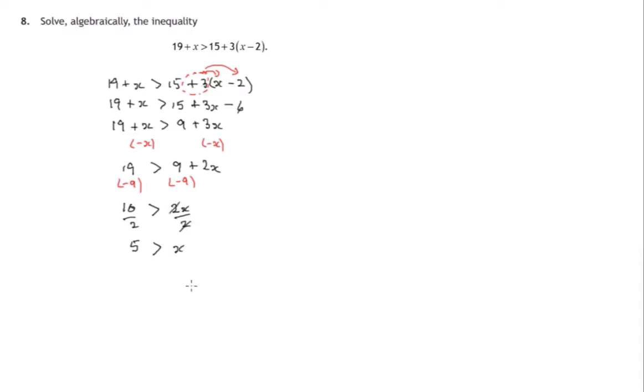Now, if 5 is larger than all the numbers x that solve this inequality, then all these numbers will be less than 5. We can rewrite this inequality the other way around. We usually write these inequalities with the variable, with the x, with the letter at the beginning. So that's one method.